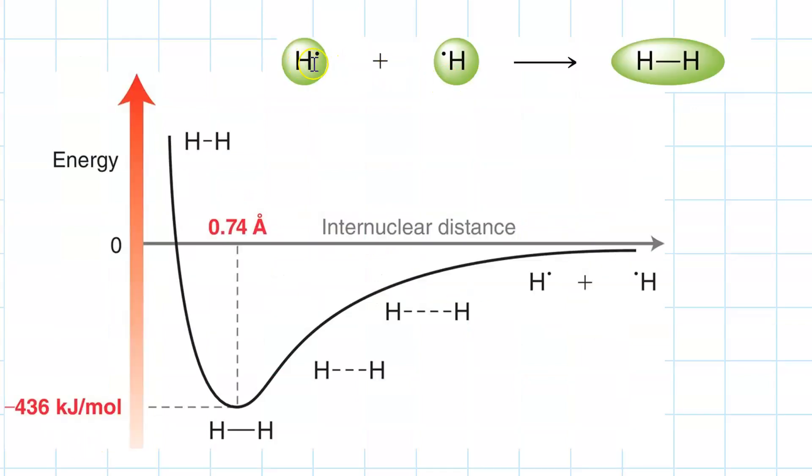This graph shows what happens when you take two hydrogen atoms and you start bringing them closer and closer together to get a hydrogen molecule. On the far right, we're at effectively infinite distance, where the two hydrogen atoms are not attracted to each other, and hence their energy is zero, via Coulomb's law. As you bring them closer and closer together, electron nuclear attraction starts to lower the energy.